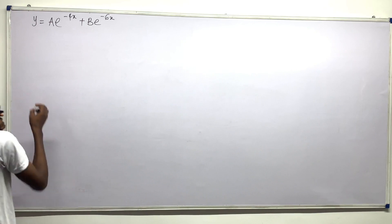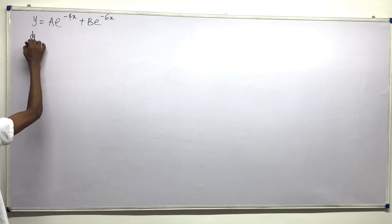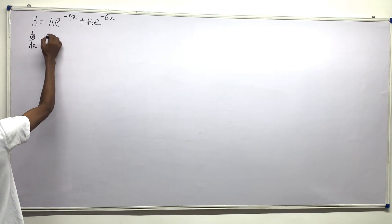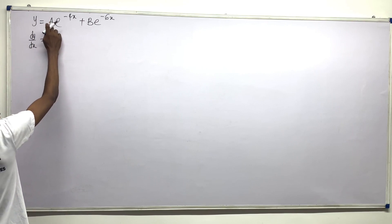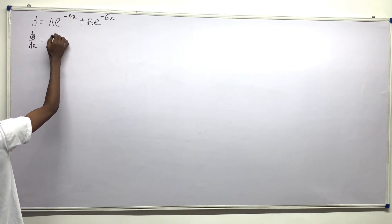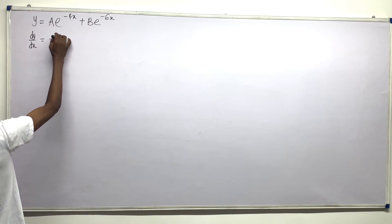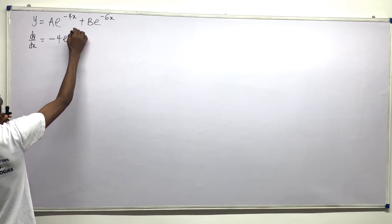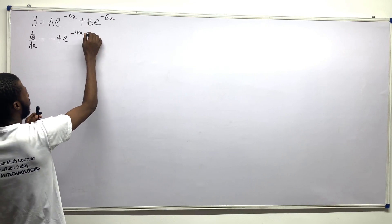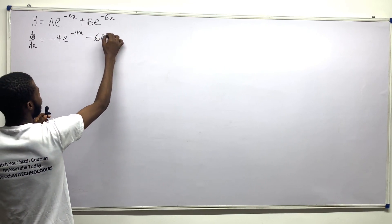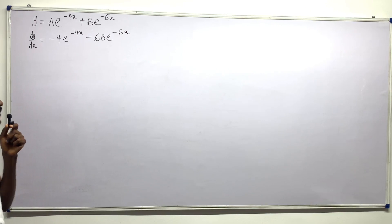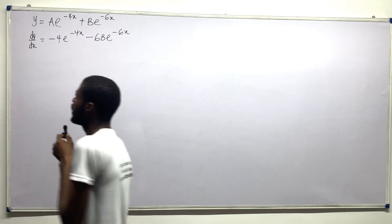Let us differentiate with respect to x. Differentiating the first term gives us minus 4, times A, giving minus 4Ae to the minus 4x. Differentiating the second term gives minus 6Be to the minus 6x.